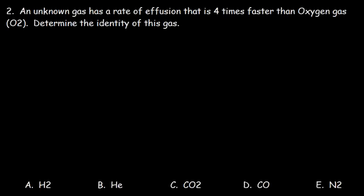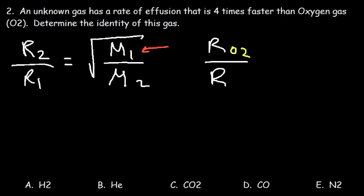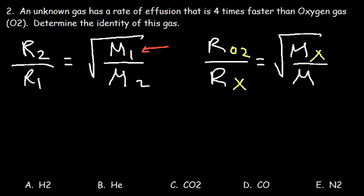Let's start with the equation for Graham's Law of Effusion. We need to find the molar mass of the unknown gas. It's easier to solve for M1 rather than M2 because M1 is on top. So subscript 1 corresponds to the unknown gas and subscript 2 is for oxygen. We have: R_O2 over R_unknown equals the square root of M_unknown over M_O2.